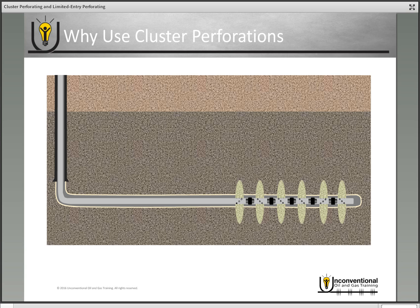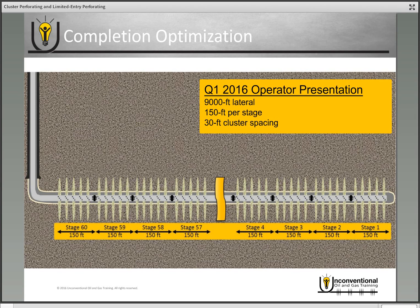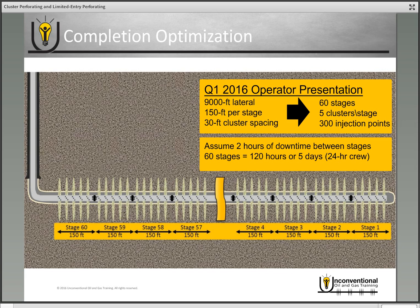Here's an example from a Permian operator in Q1 2016 looking at completion optimization. They had a 9,000-foot lateral with 150 feet per stage and 30-foot cluster spacing — translating to 60 stages, five clusters per stage, and 300 injection points. Assuming two hours of downtime between stages, 60 stages equals 120 hours or five days. But if you did 300 individual stages, that would be 600 hours or 25 days of downtime alone — not including the fracturing job itself.